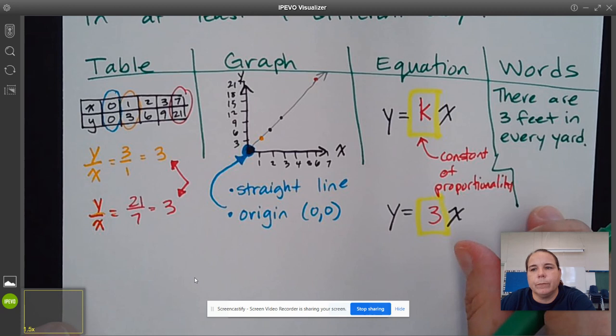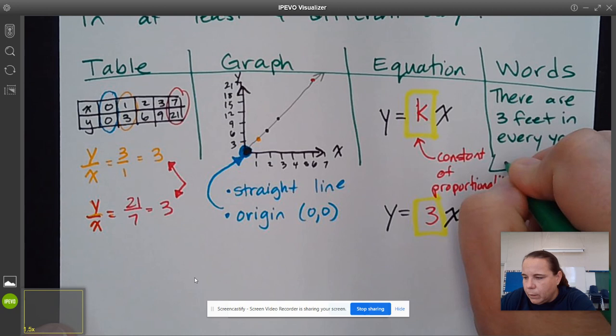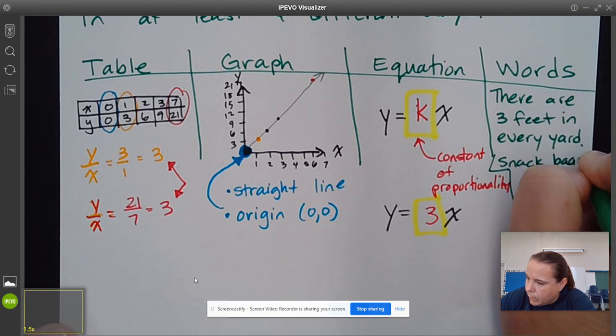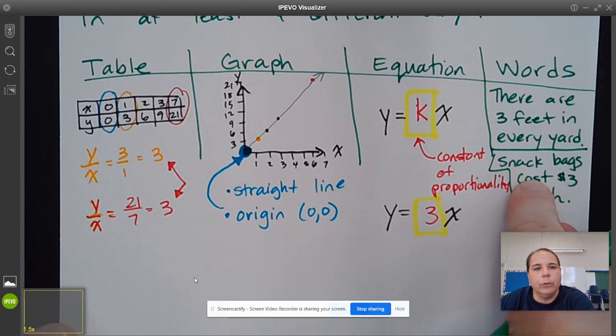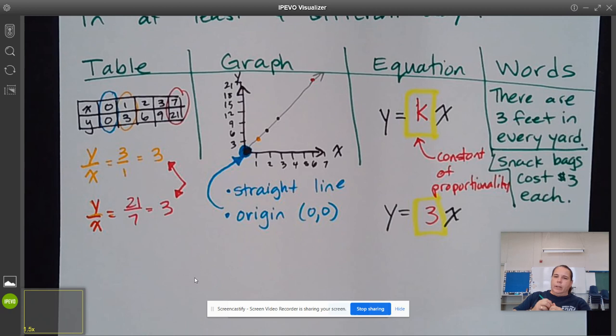We could also say something like snack bags cost $3 each. So these are two different examples that we could use that could be represented with these proportional relationships.